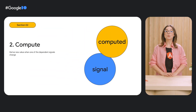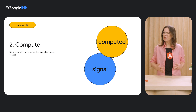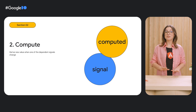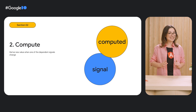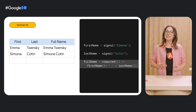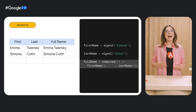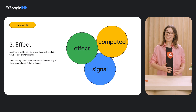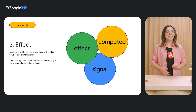Thanks, Emma. Together, signals create a graph of dependencies which model how data flows in your application. Reactive context lets you do some pretty cool things. In many situations, you might find yourself deriving state from existing values, with the goal to have the derived state update when the dependent value changes. With computed, we can declaratively express that full name depends on the first name and last name, and expect it to be updated automatically when they change. There are times when we might want something to occur when a signal has a new value. With effects, we can run a side-effectful function as a result of a signal change.